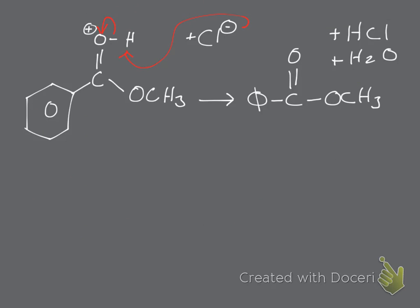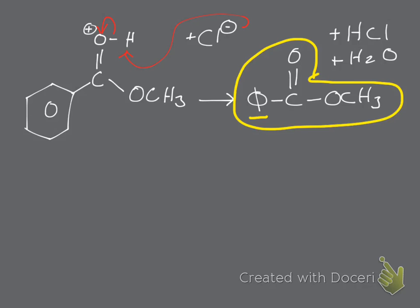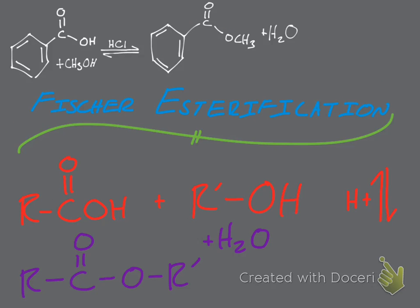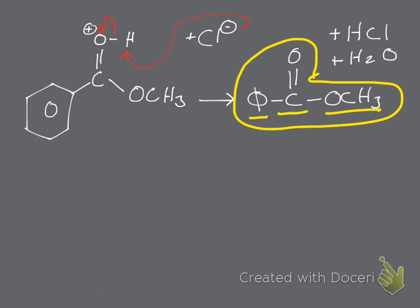Let's verify our finished product. We have benzene, carbonyl carbon, and OCH₃ — and of course water in solution. We also have HCl, confirming this is acid-catalyzed. We have everything that would allow us to run this reaction again in either direction, which makes sense since it's an equilibrium.